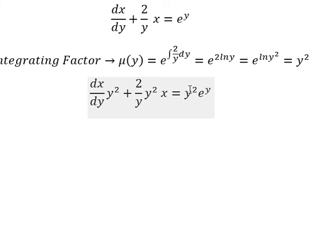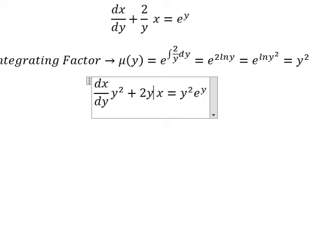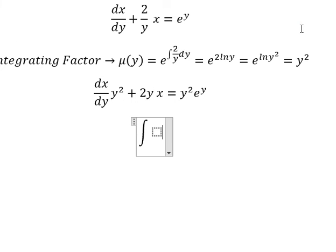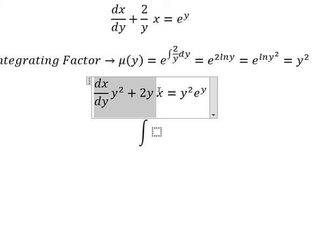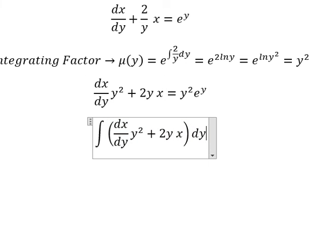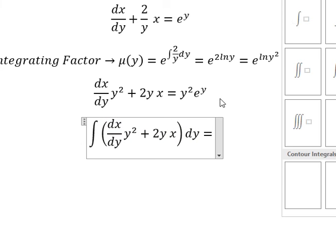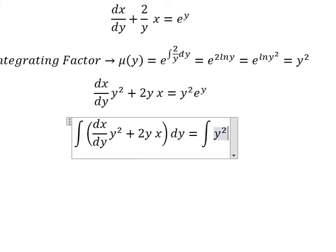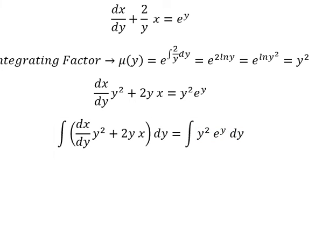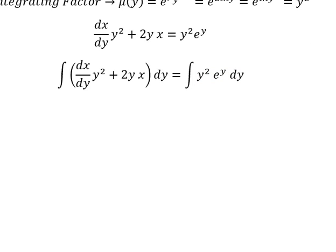That means we multiply both sides by y squared. Next, we simplify this one. Now we put the integral for both sides. Now this is about dy.